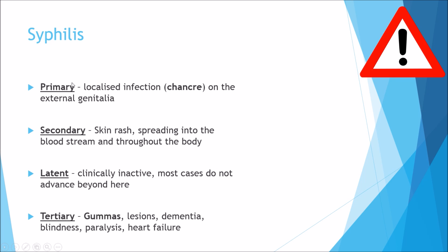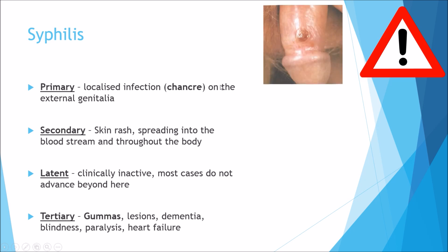The primary stage of syphilis is a localized infection where you get something called a chancre forming on the external genitalia. This is the primary thing to look out for — if you see a chancre forming, you may have syphilis.